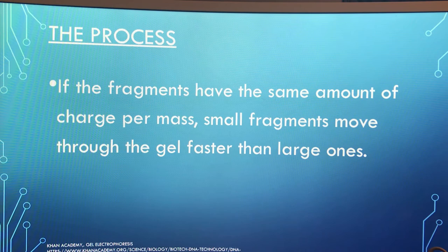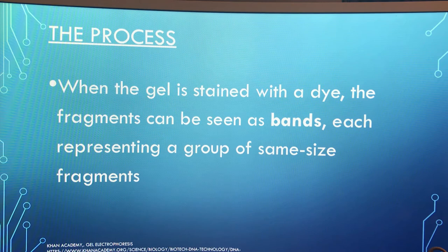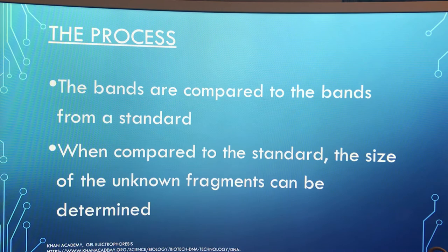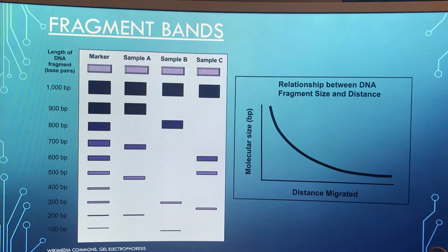If the fragments have the same amount of charge per mass, small fragments move through the gel faster than large ones. When the gel is stained with a dye, the fragments can be seen as bands, each representing a group of same-size fragments. The bands are compared to the bands from a standard, allowing the size of the unknown fragments to be determined. This is an example of the fragment bands.